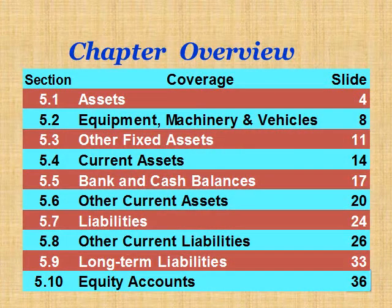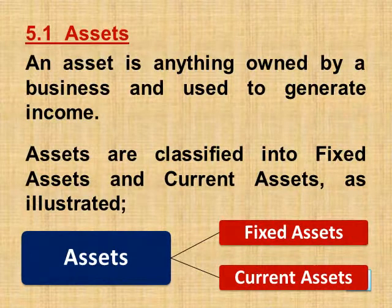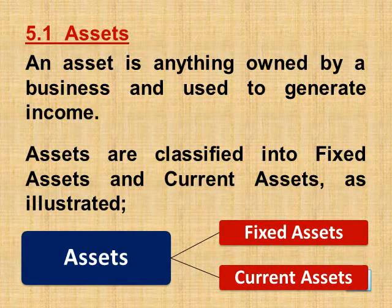Chapter Overview: 5.1 Covers Assets, on Slide 4. 5.2 Equipment, Machinery and Vehicles, on Slide 8. 5.3 Other Fixed Assets, on Slide 11. 5.4 Current Assets, on Slide 14. 5.5 Bank and Cash Balances, on Slide 17. 5.6 Other Current Assets, on Slide 20. 5.7 Liabilities, on Slide 24. 5.8 Other Current Liabilities, on Slide 26. 5.9 Long Term Liabilities, on Slide 33. 5.10 Equity Accounts, on Slide 36.